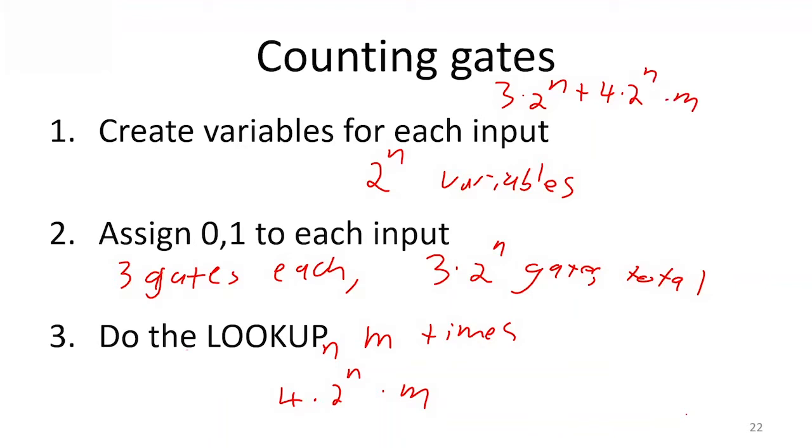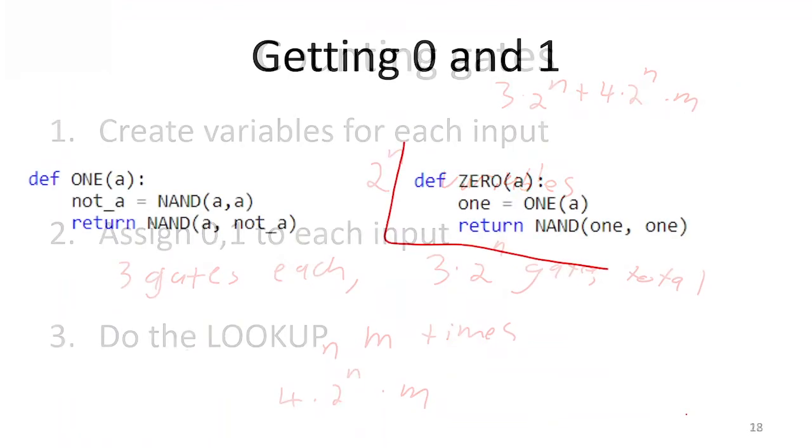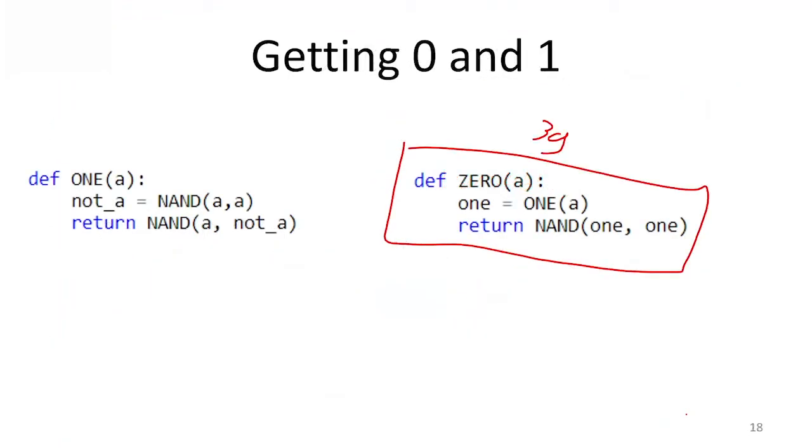Yeah, so the 3 came from this. This was 3 gates. So when we're assigning our inputs, every time we needed to do a 0, we had 3 gates. So an upper bound for the number of gates we'd have to use to assign our inputs was when we had to assign 0s to everything.